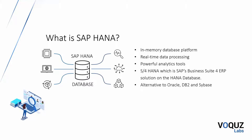Not to be confused with S4 HANA, which is SAP's business suite ERP solution on the HANA database. HANA is the database itself and can be licensed to run non-S4 SAP applications and other non-SAP applications as well. SAP HANA is an alternative to other database solutions and third-party database products sold by SAP such as Oracle, DB2 and Sybase.